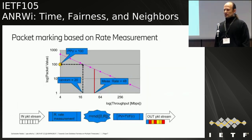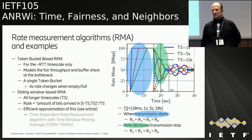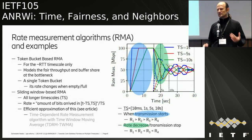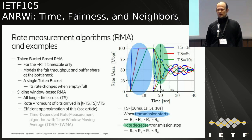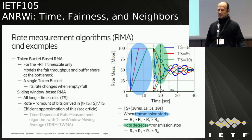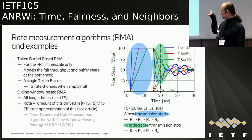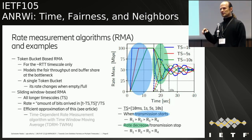For multiple timescales, we need to measure bitrates on multiple timescales. We introduce two different rate measurement algorithms. The first is a token-bucket-based rate measurement for the RTT timescale only, since it models the first throughput and buffer share of the bottleneck well. The other is a sliding window-based rate measurement for longer timescales, where the rate is the amount of bits arrived in the last timescale interval divided by the timescale length. When transmission starts, the bitrate on the smallest timescale is always larger than on the next, and so on.